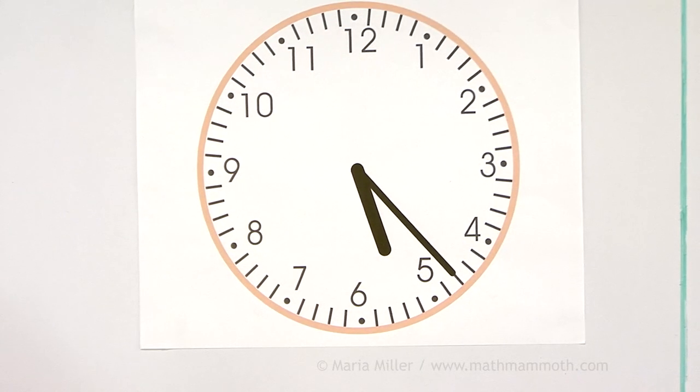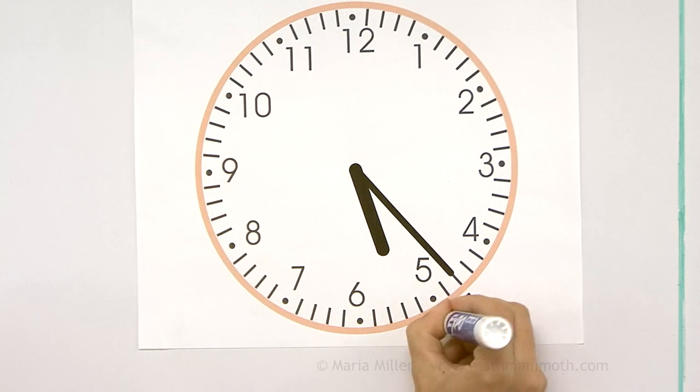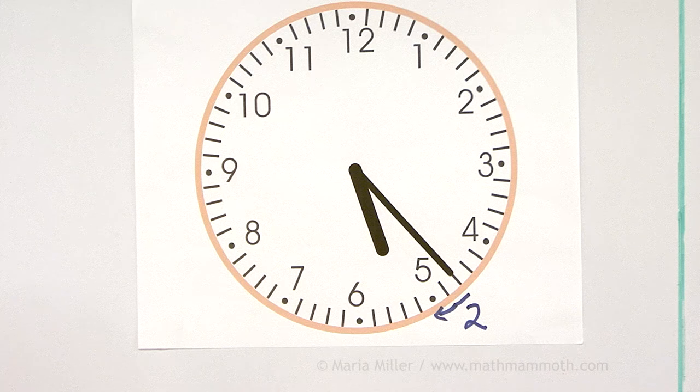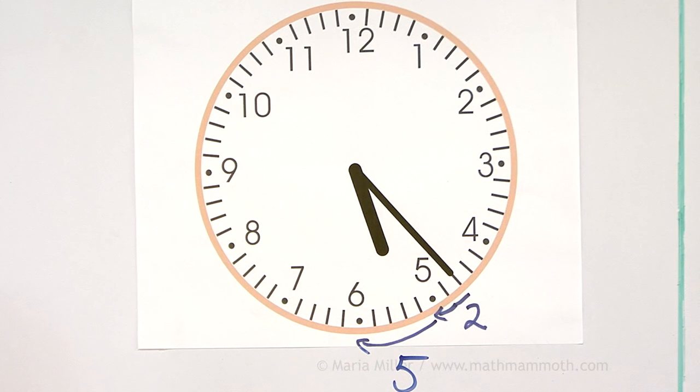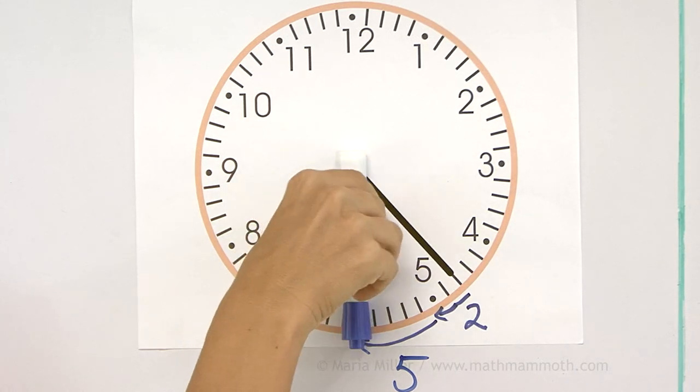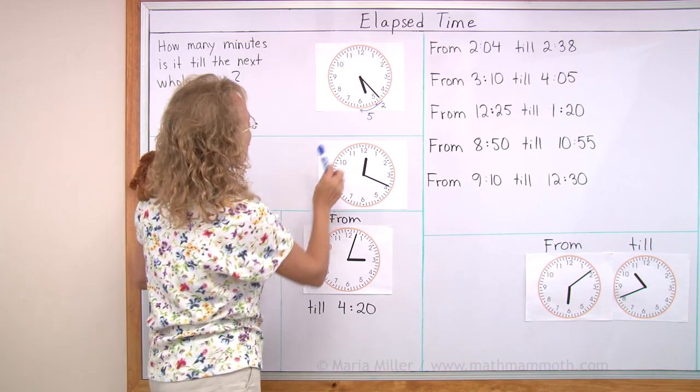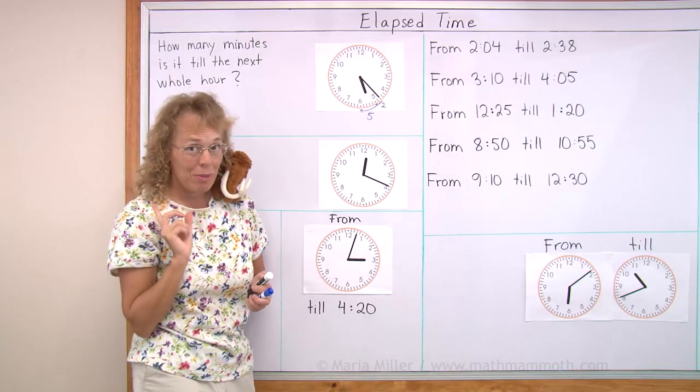And I can do that in several parts. I can first figure out that this much is two minutes. And then from this to this, there would be five minutes. And then from here till there would be half an hour. So in total we get the 30 minutes and five and two, 37 minutes.